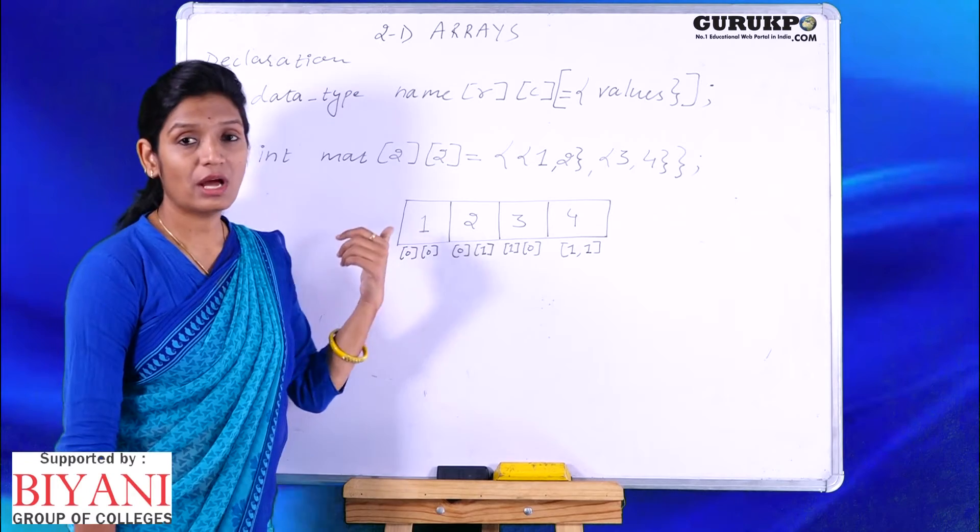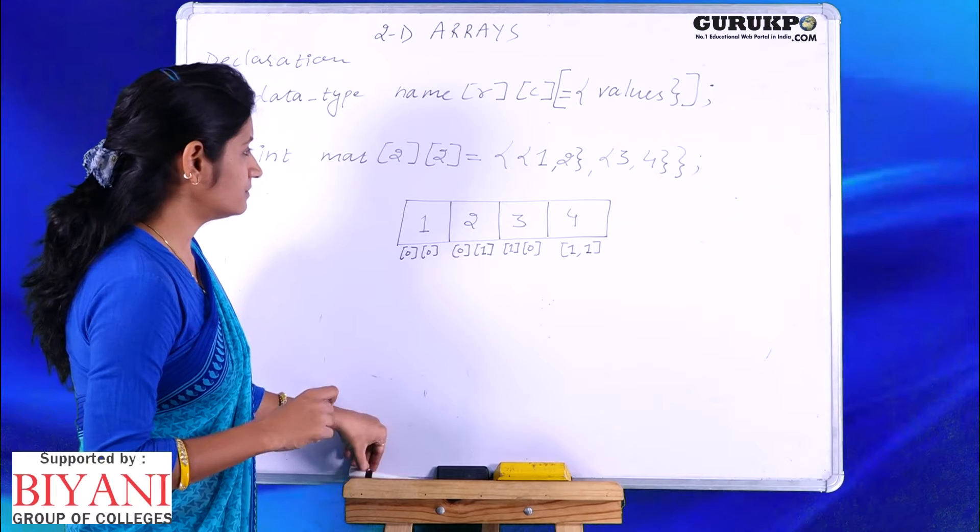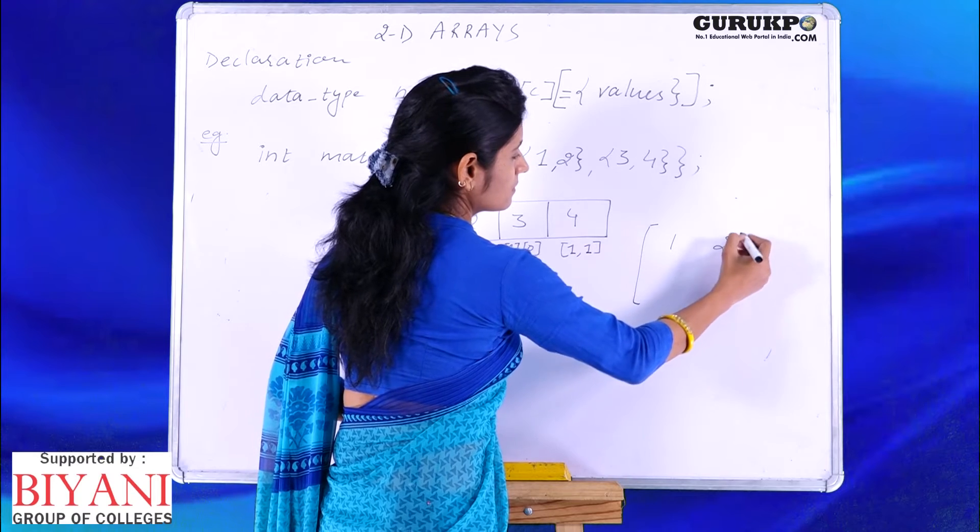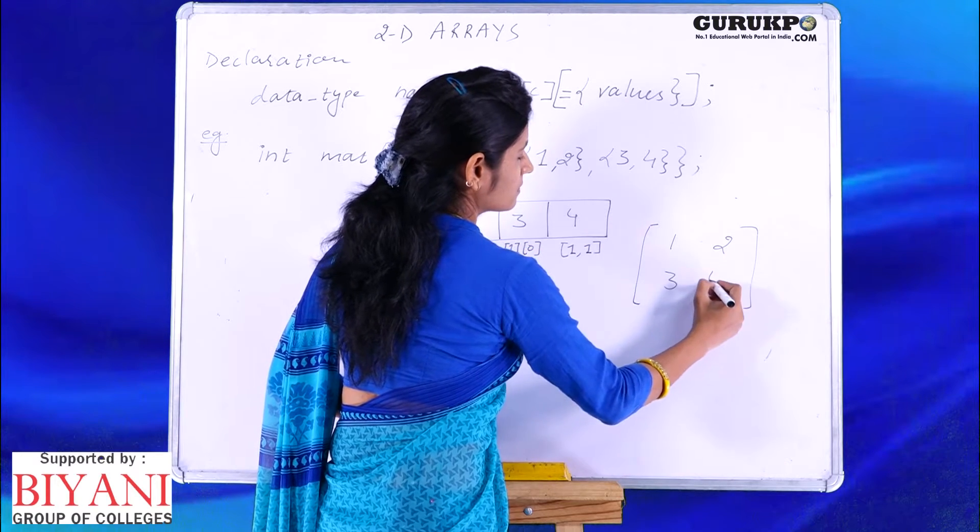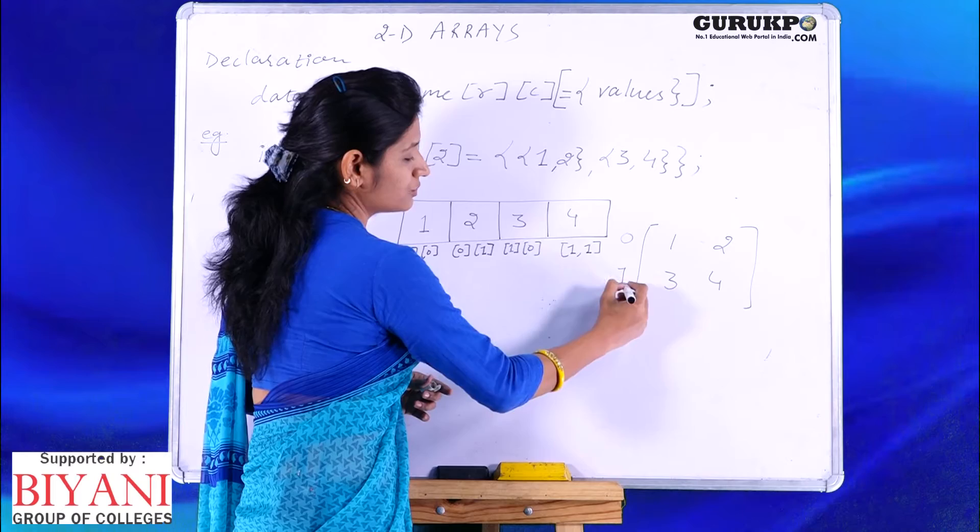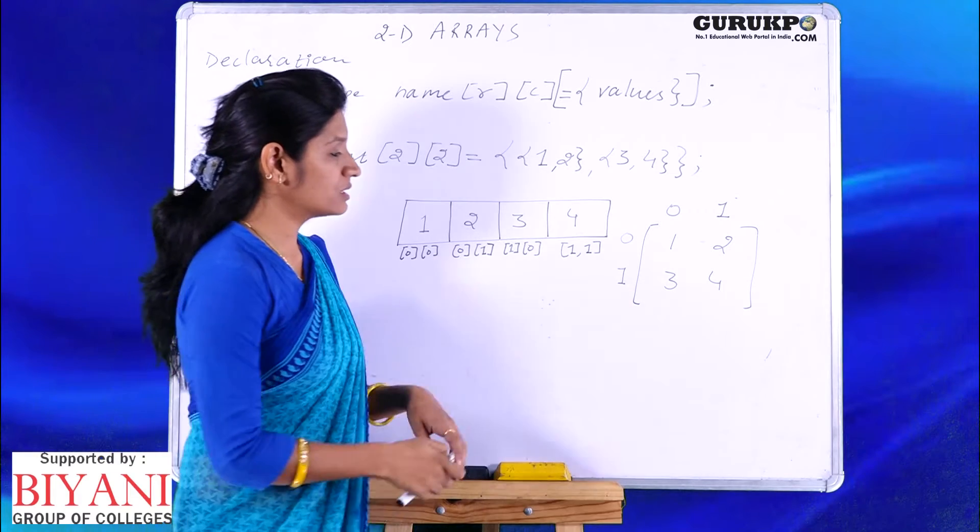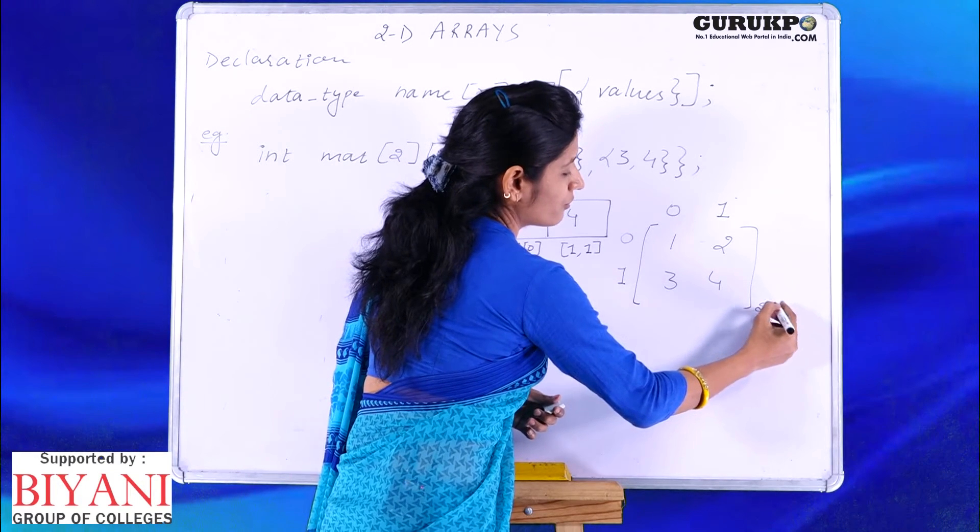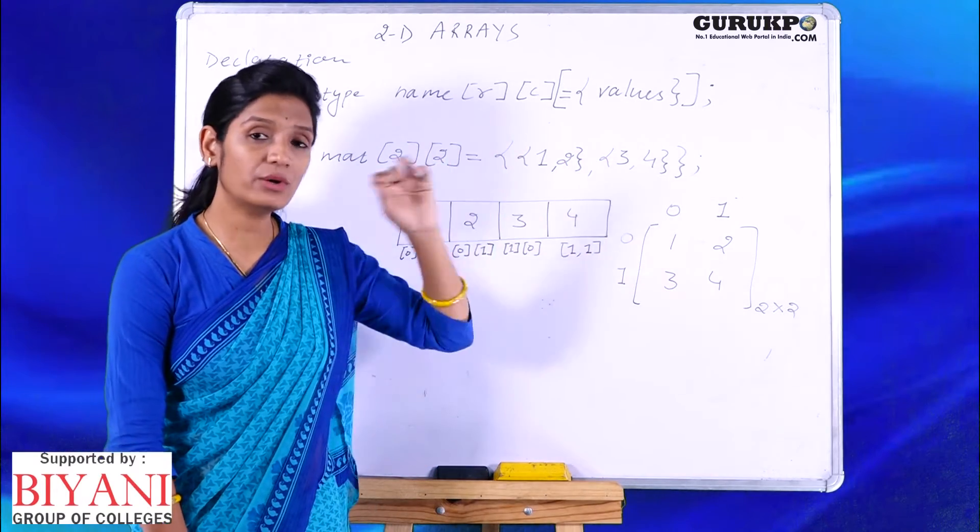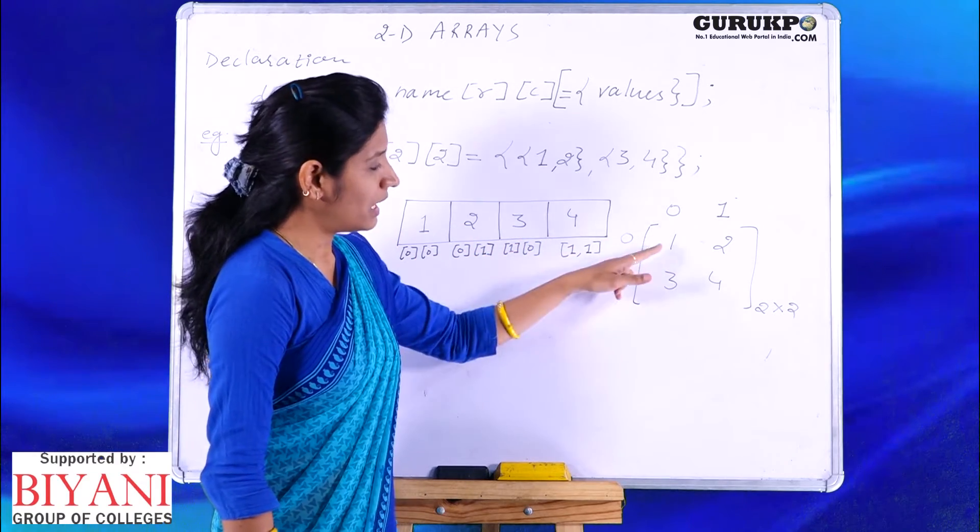For example, suppose I want to declare a matrix of two rows and two columns. This is the zeroth row and this is the first row, this is the zeroth column and this is the first column. It is a two by two matrix: two number of rows and two number of columns. If we want to declare any such structure, we will go for two dimensional arrays because they are expanding in rows and in columns as well.